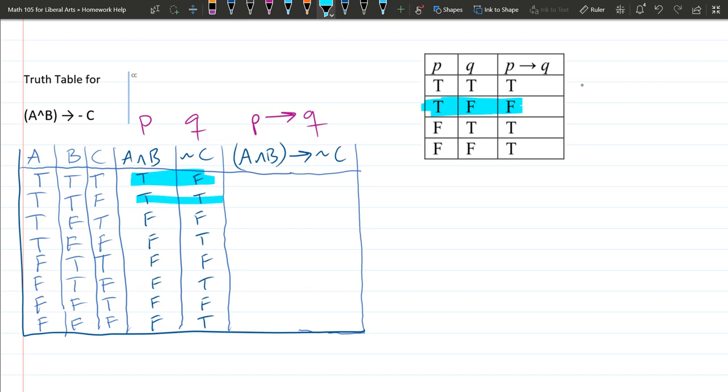If you look at every other combination—true, true, false, false, false, true—all these other combinations... oops, I went too far. So that's the only combination that leads to false right there.